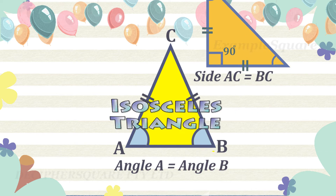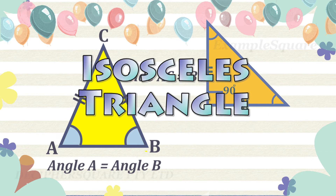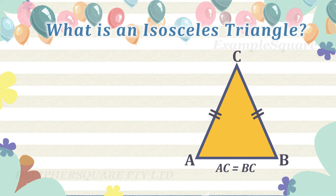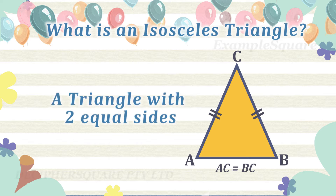Isosceles Triangle. What is an isosceles triangle? A triangle is a polygon with three sides. An isosceles triangle is a triangle in which two of the sides are of equal length.